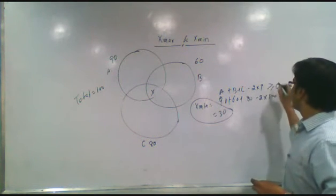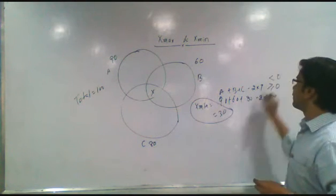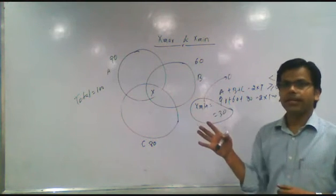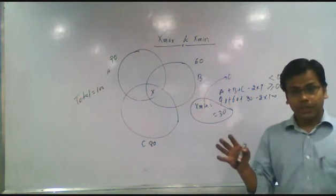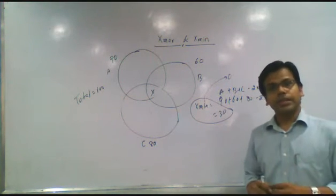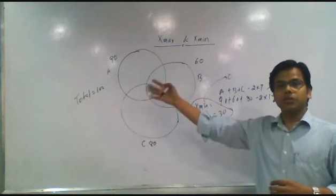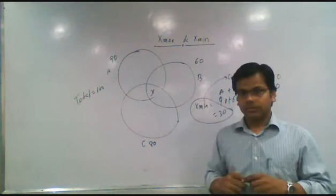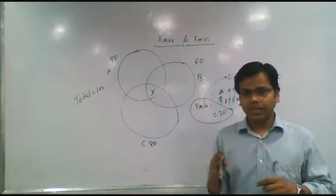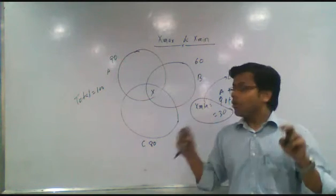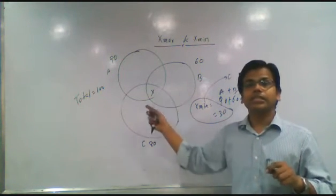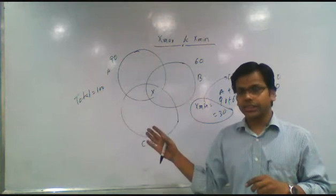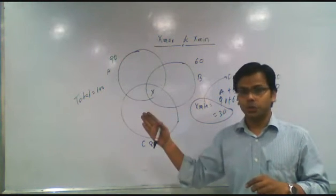If by this formula we get a negative value, then x minima is 0, because in a set we cannot get a negative value. To summarize x minima: add the set values minus 2 times the total (100), giving 30. The condition is that all 100 elements are part of these three sets. If this condition is not mentioned, we may need to work on additional conditions.